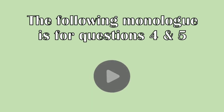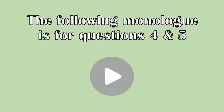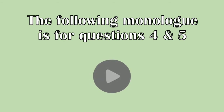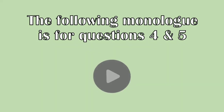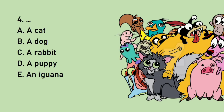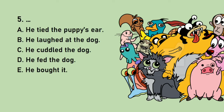The boy chuckled but the puppy became quiet. "Can you throw your ears over your shoulders like a regimental soldier?" asked the boy. The puppy put his head on the ground and whimpered. The little boy laughed and hugged the puppy. The puppy wagged his tail happily. Number 4: What did the boy get for his birthday? Number 5: What did the boy do to his new pet?